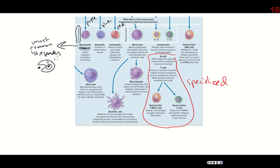Eosinophils are pretty cool — they can be elevated if you have certain types of parasitic infections like worms. If we do a blood smear and see a lot of eosinophils, we might think it's a helminth infection and do additional tests to find out. Basophils are associated with inflammation and are really important when we talk about allergies later.